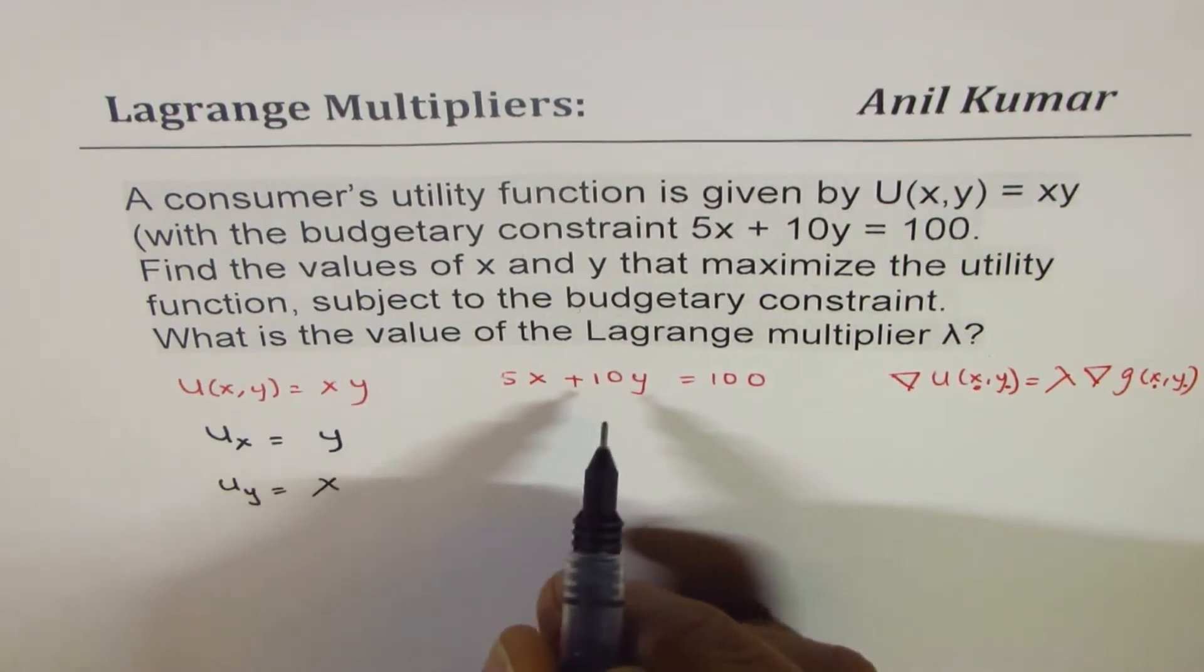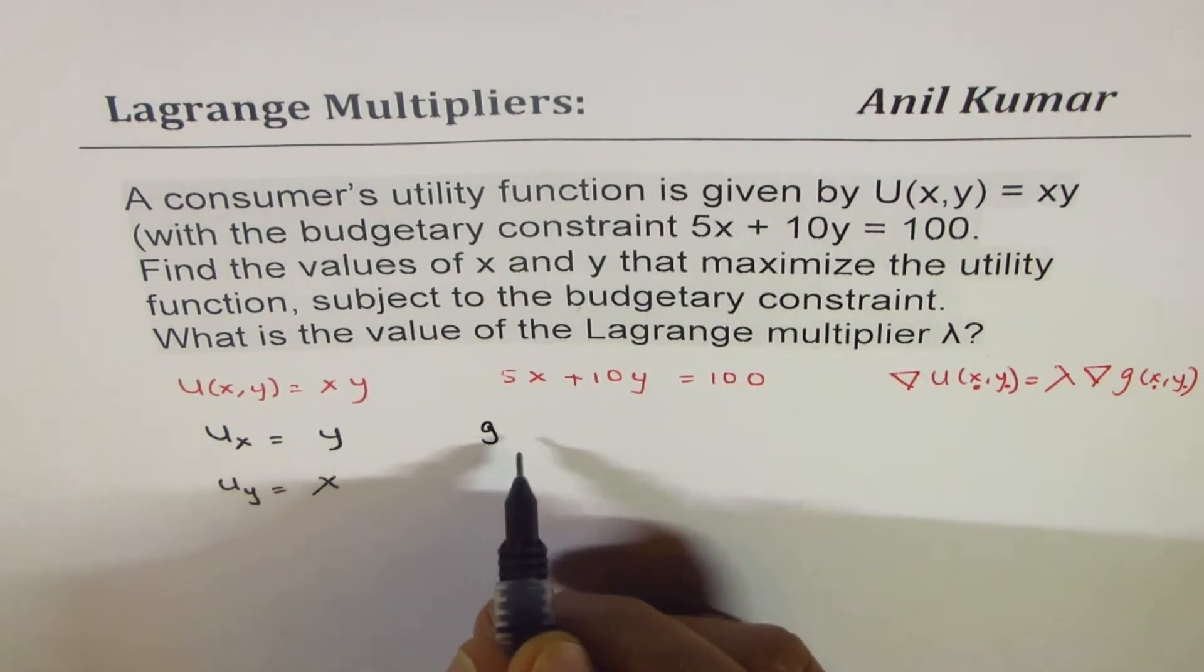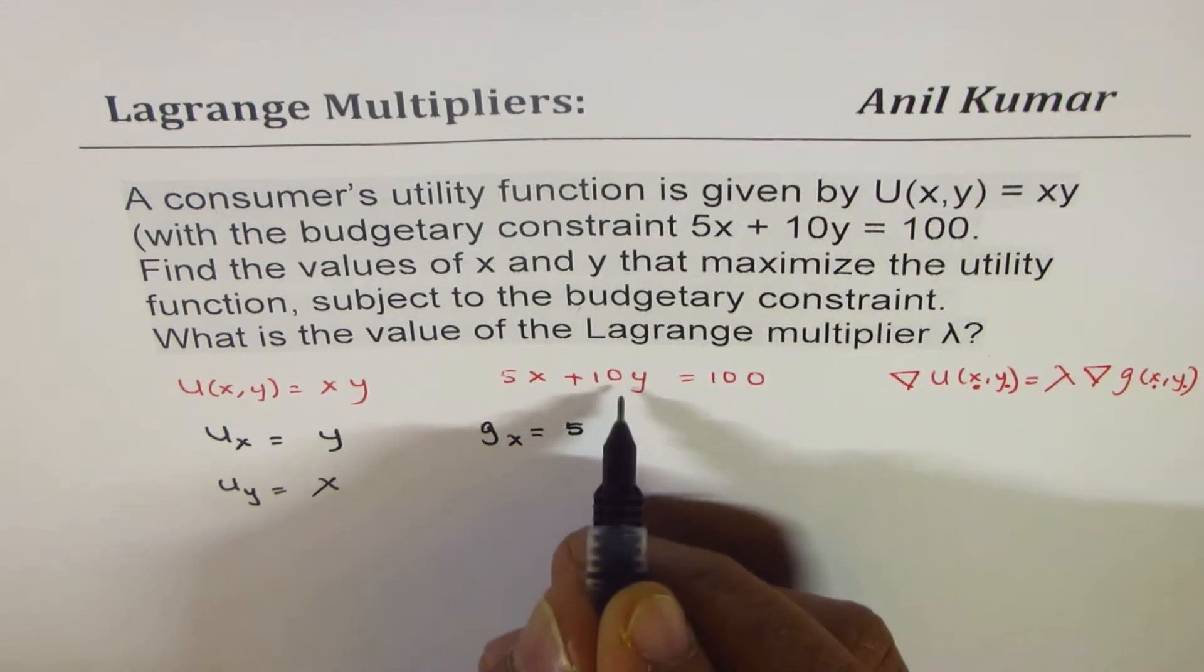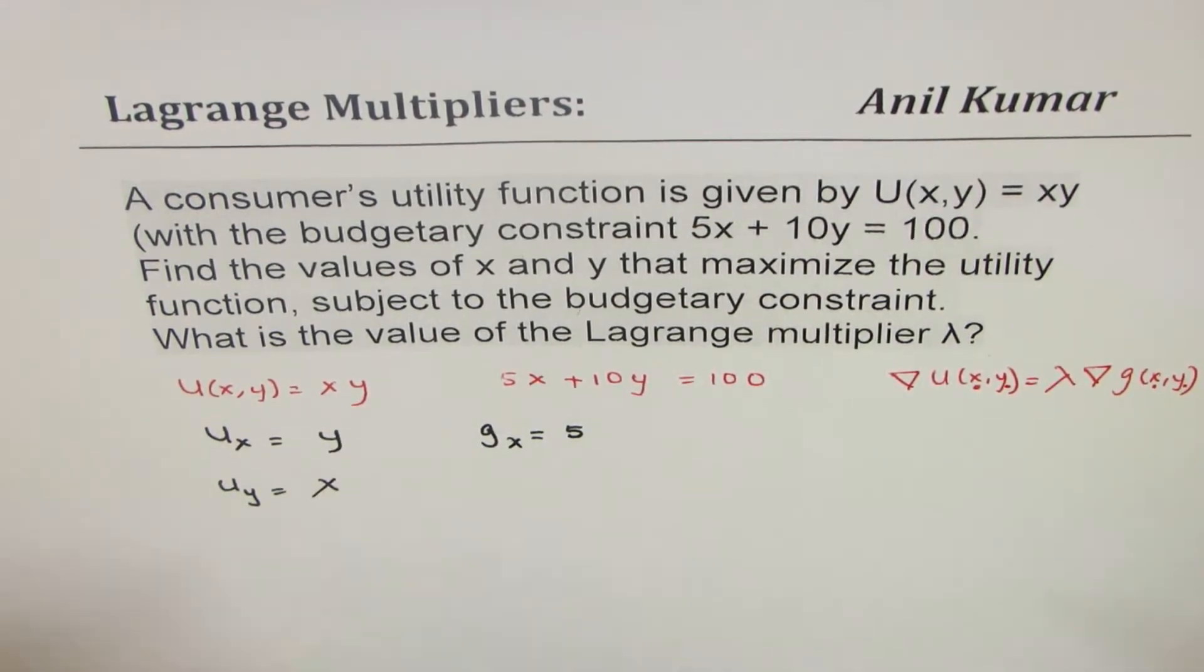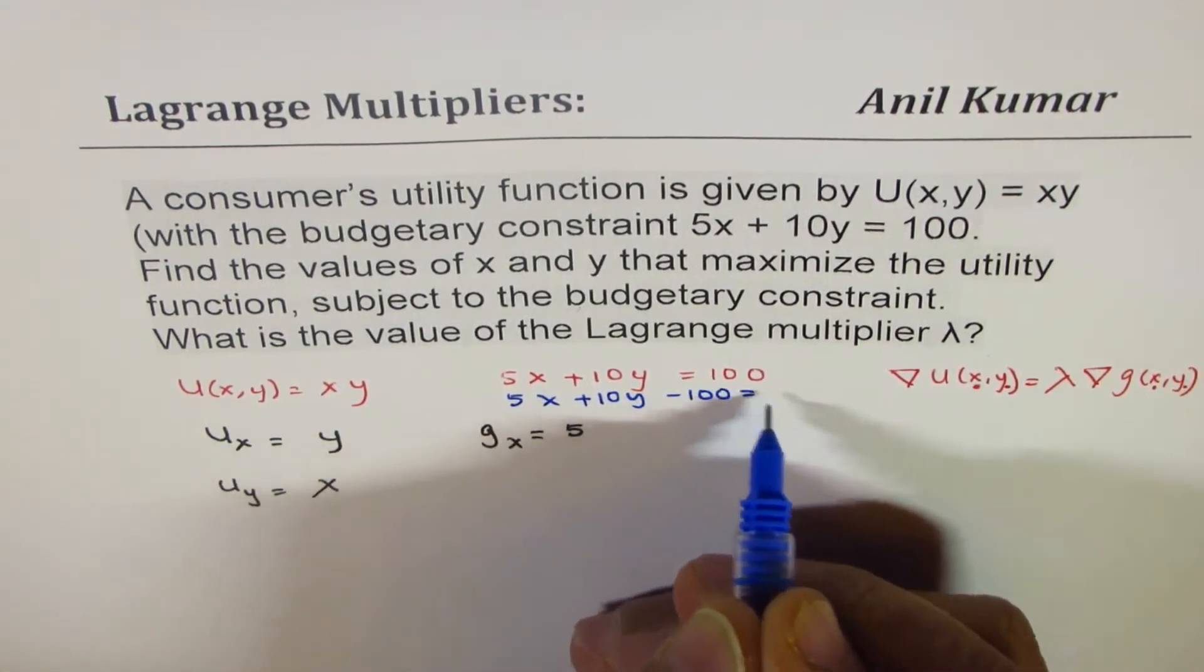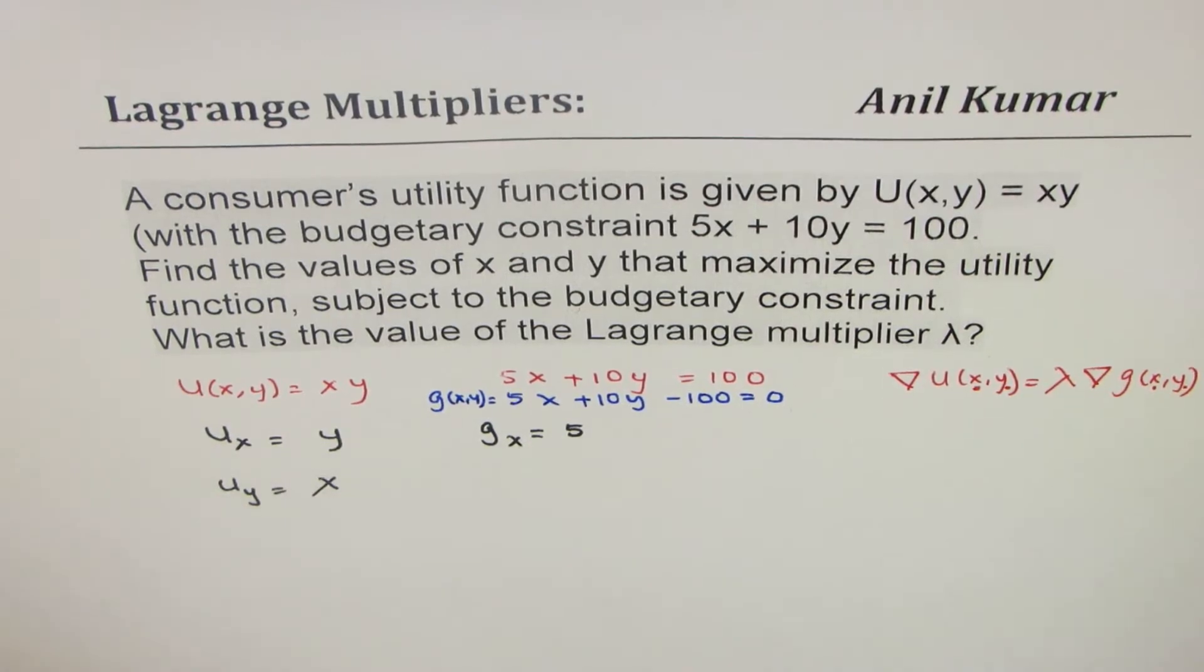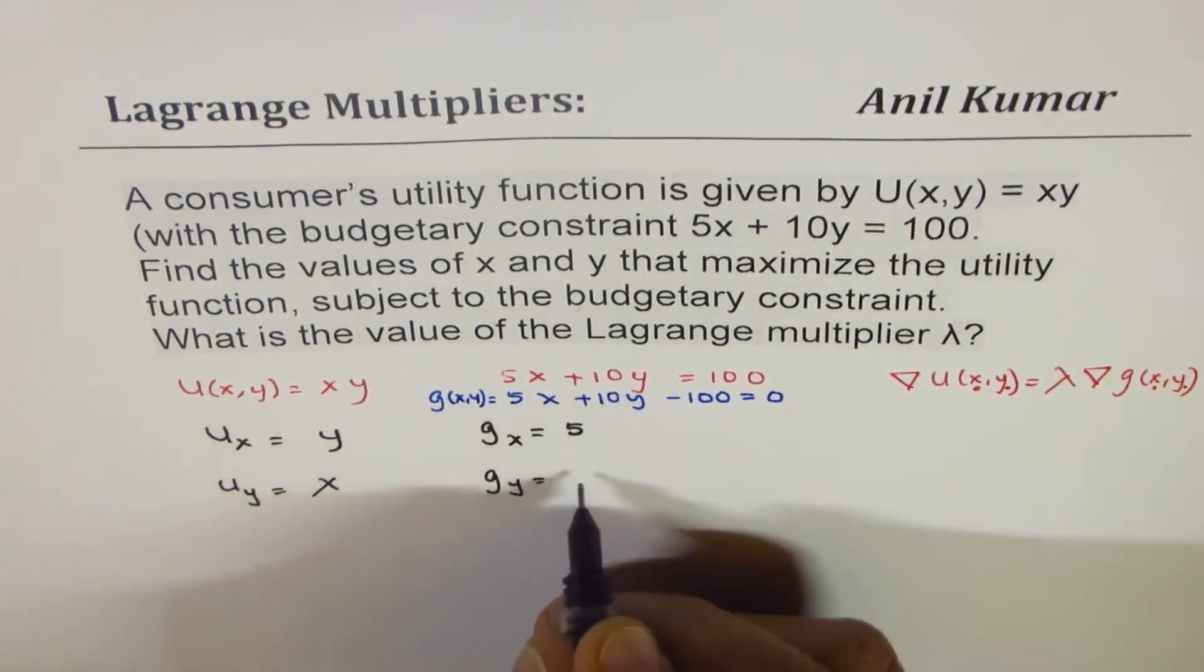Now, for the constraint, the partial derivative with respect to x will be 5. You could rewrite this as 5x plus 10y minus 100 equals 0, right? So that is your gx. So gx is 5, and gy equals 10.